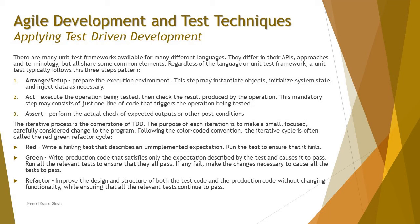The iterative cycle is called the Red-Green-Refactor cycle. Red: write a failing test that describes an unimplemented expectation, then run the test to ensure it fails — this is the initial state in TDD without code. Green: write production code that satisfies only the expectation described by the test and causes it to pass; run all relevant tests to ensure they all pass. Refactor: improve the design and structure of both test code and production code without changing functionality, while ensuring all relevant tests continue to pass.